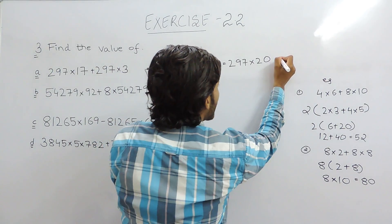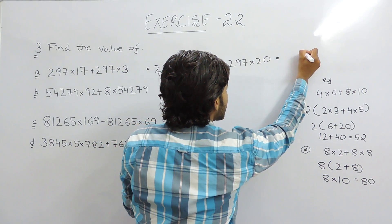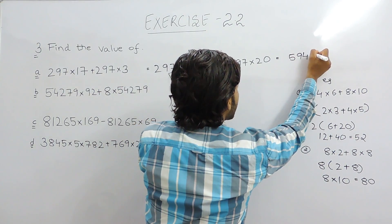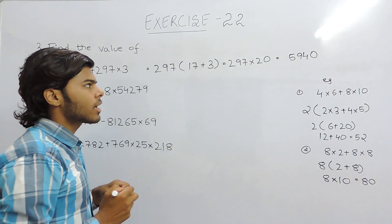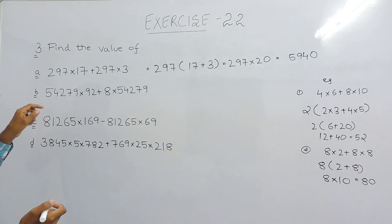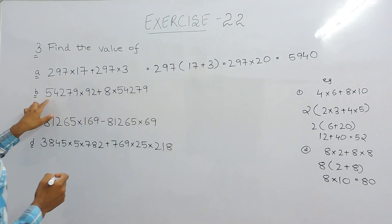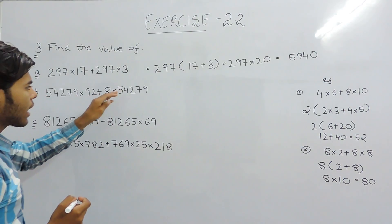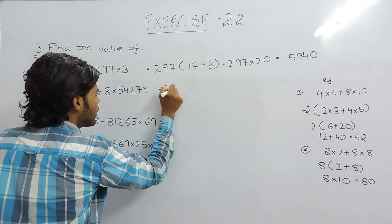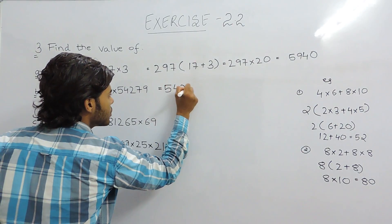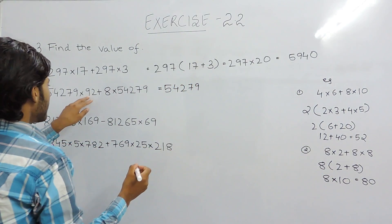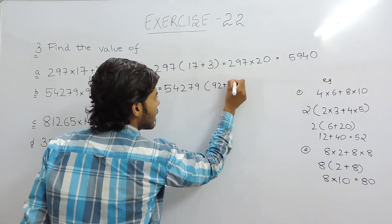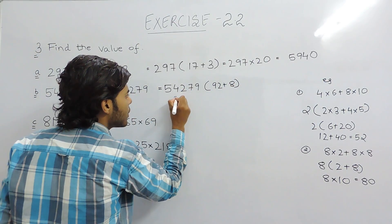We can multiply this to get the required answer: 297×20 = 5940, which is the required answer. In the next question, we can see that 54279 appears on the left-hand side and the right-hand side also, so it can be taken out as common. Inside the bracket there remains 92 + 8, and 92 + 8 = 100.